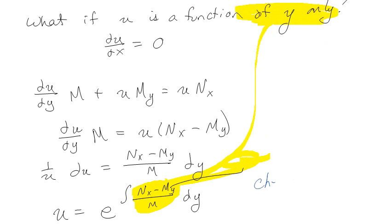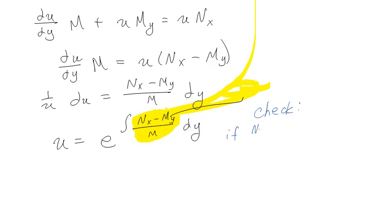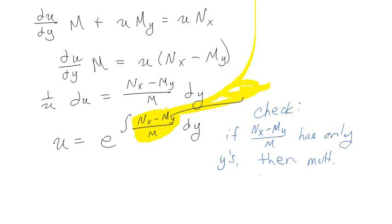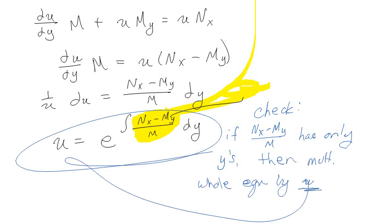So we would check and say: if (Nx - My)/M has only y's, then you want to multiply the whole equation by u, where u is defined by that expression. You can use one or the other formula depending on which condition is satisfied.